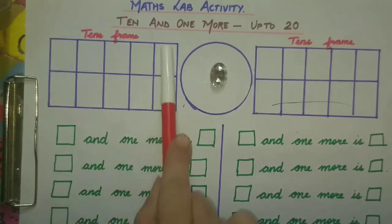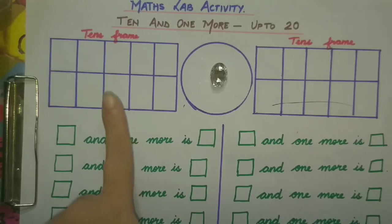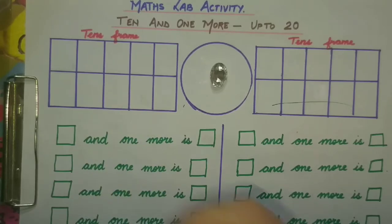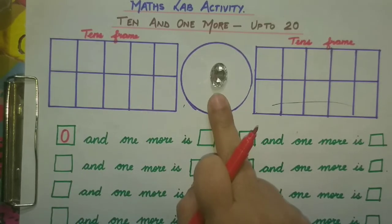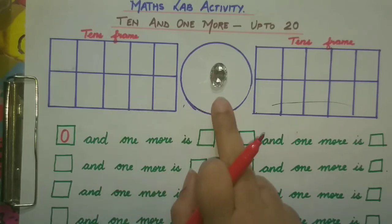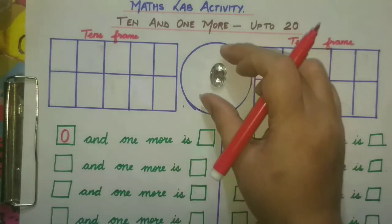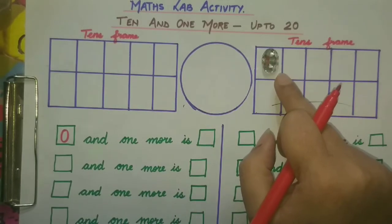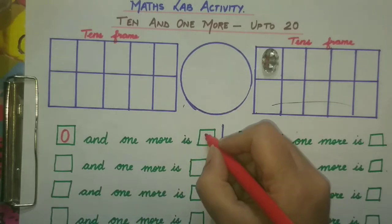Now here in this ten frame, how many objects are there? Nothing — nothing means 0. So our first number is 0. 0 and 1 more: here we have 0 and here this is 1 more. So 0 and 1 more makes 1. We will bring this to the ten frame — 0 and 1 more is 1.